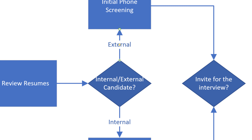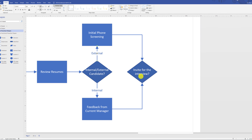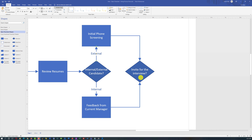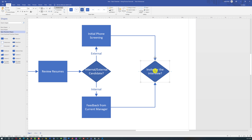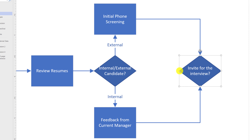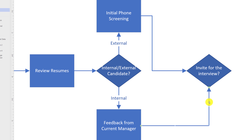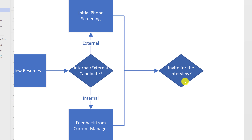If you notice something missing — for example, the 'External' label on an arrow — you can double-click on the arrow and add the text. You may also realize arrows are connected to wrong points on a shape. A decision box typically has one input and at least two outputs. You can change the input connection point by selecting the line and dragging the endpoint to a different input point on the diamond.